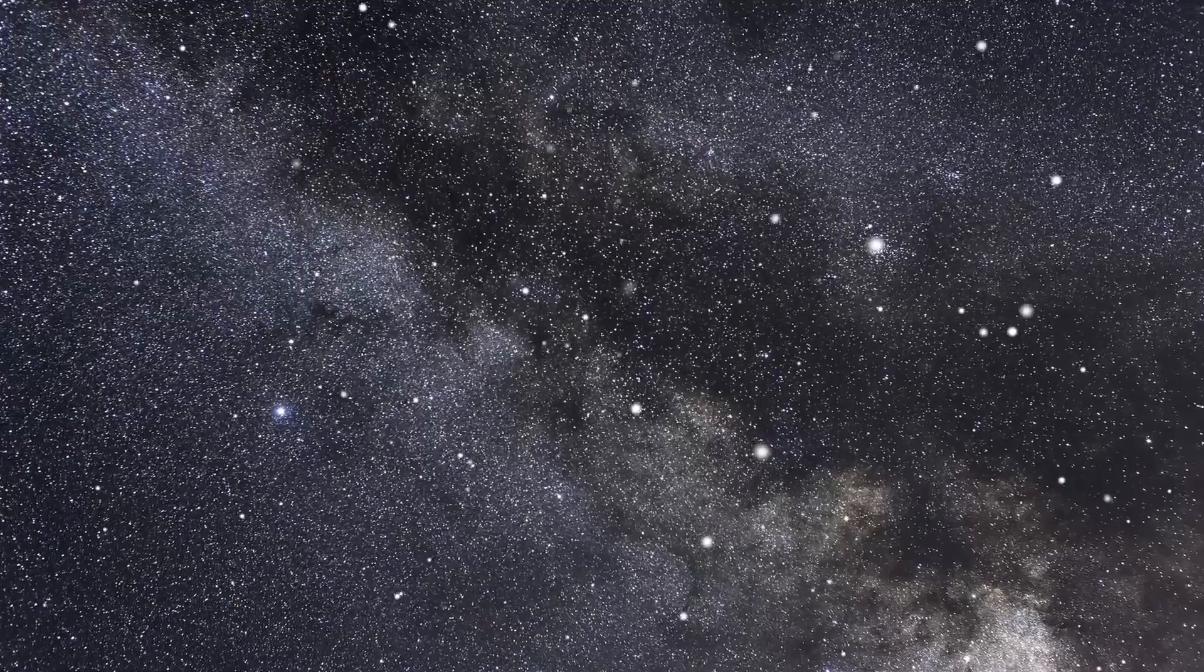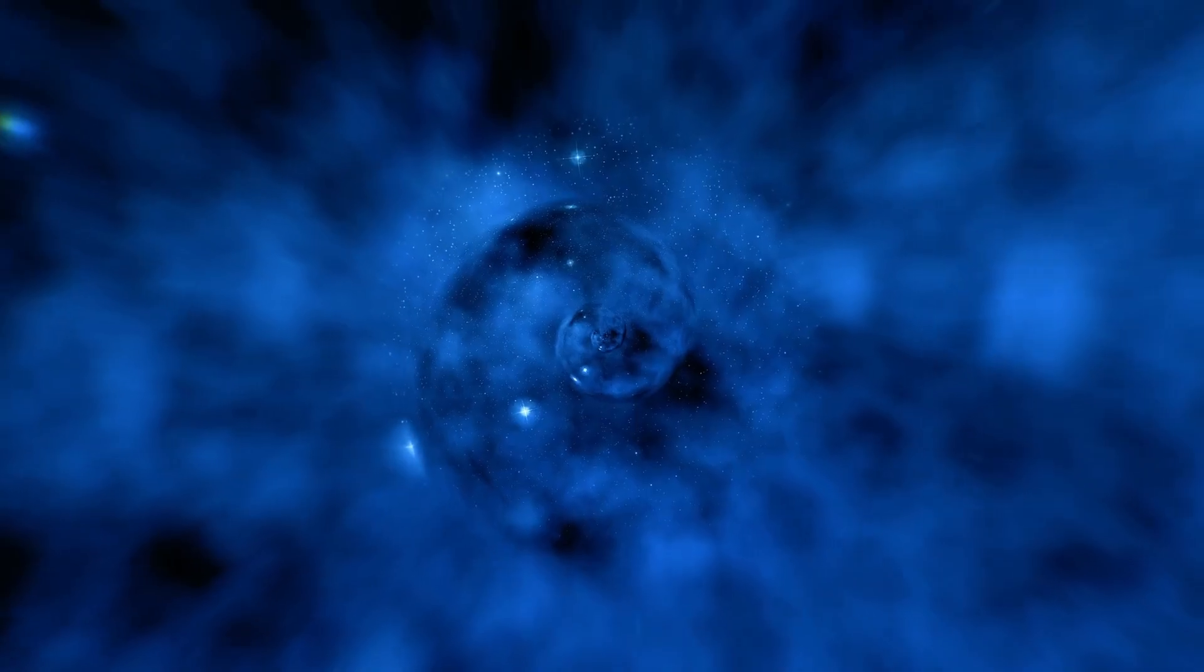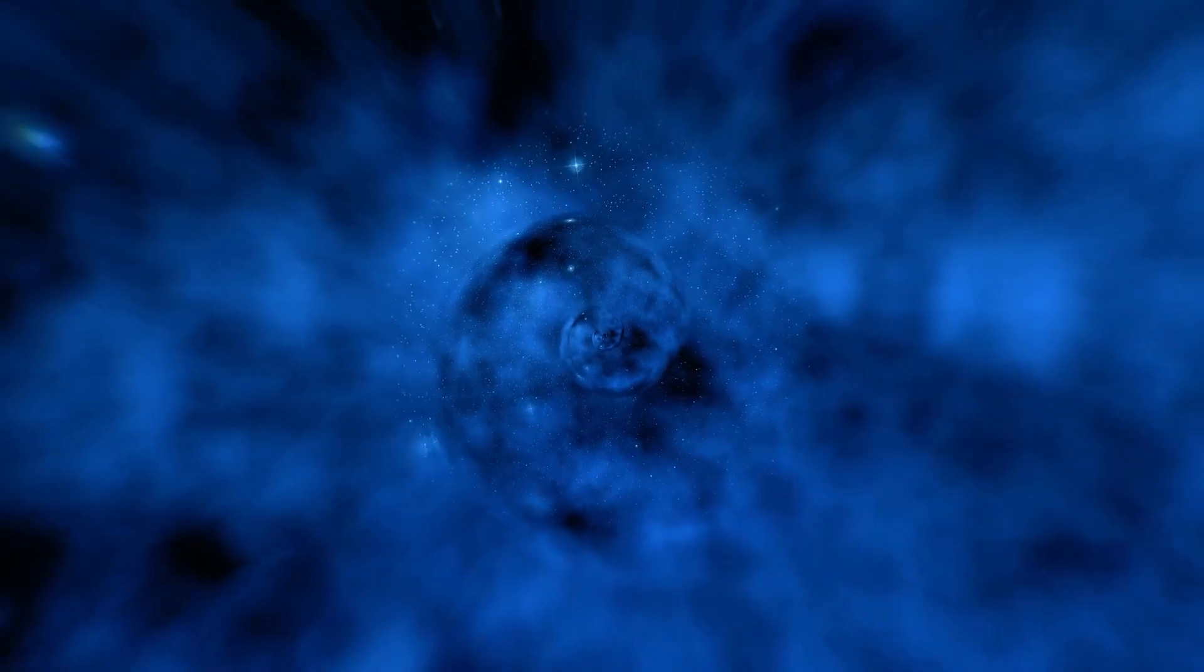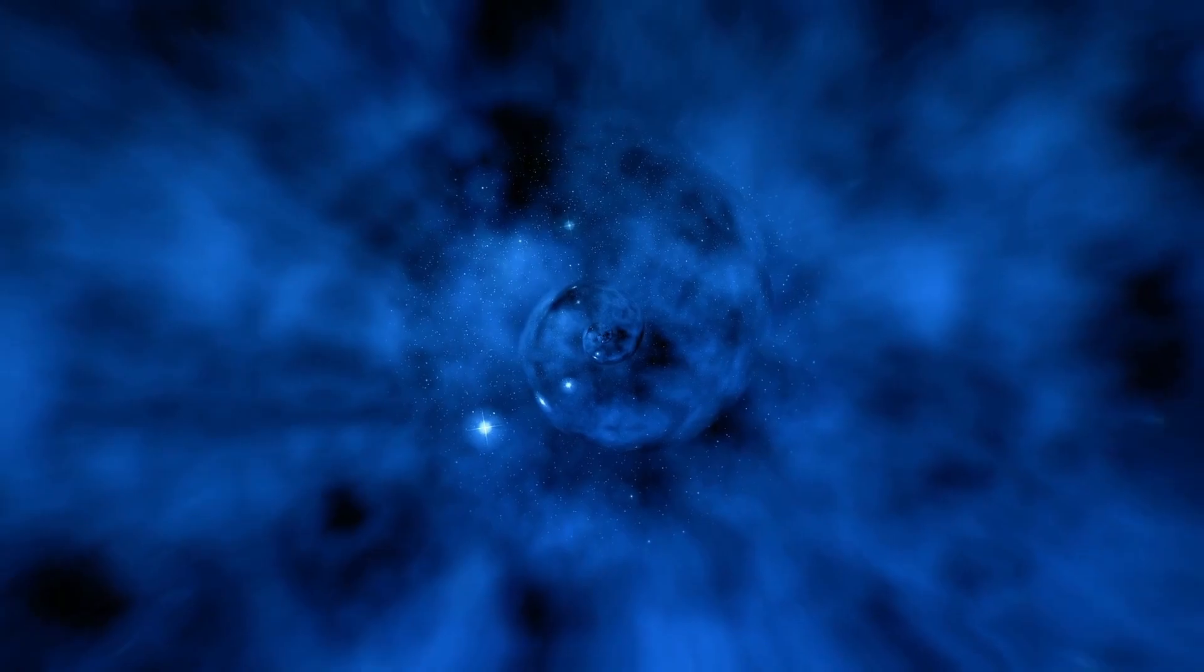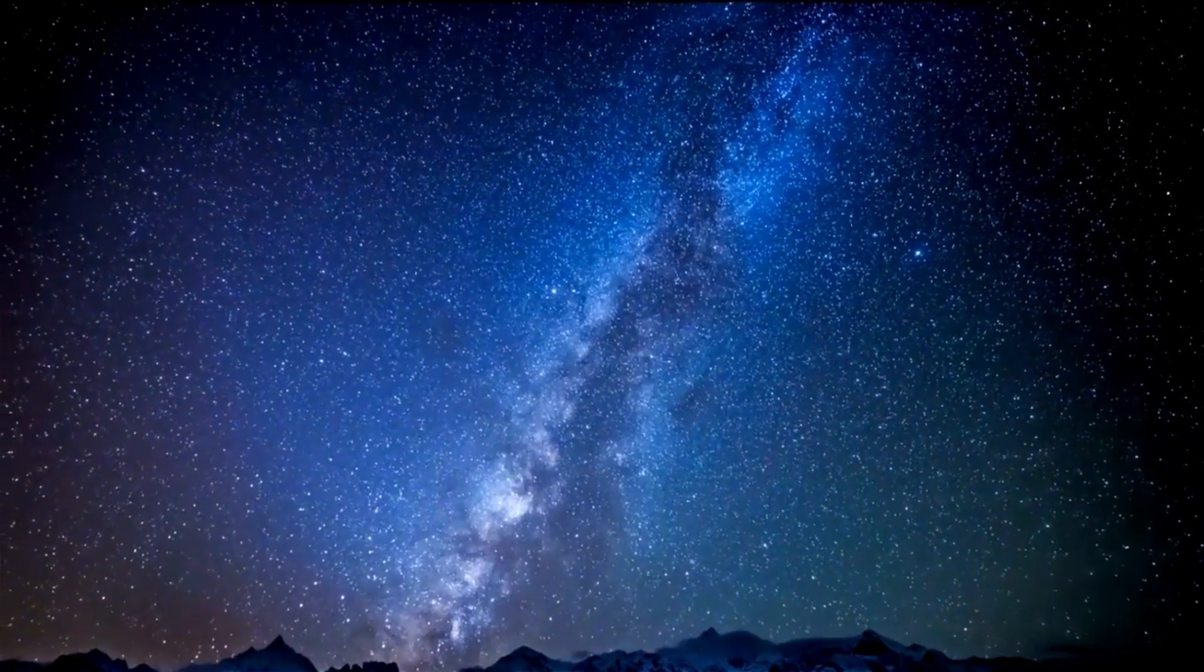The explosion of a red supergiant like Betelgeuse has profound effects on its surrounding star-forming regions. The shock waves from a supernova can trigger the formation of new stars by compressing nearby gas and dust. This process, known as triggered star formation, can lead to the creation of new cosmic systems in the aftermath of a supernova explosion. The interaction between the shock wave and the interstellar medium also contributes to the dynamics of the cosmic environment, impacting the distribution of matter and energy throughout the universe.